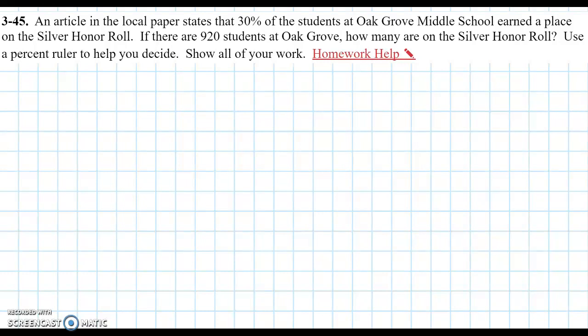Let's do a problem together that involves portions and using a percent ruler. So this problem says: an article in the local paper states that 30% of the students at Oak Grove Middle School earned a place on the silver honor roll. If there are 920 students at Oak Grove, how many are on the silver honor roll? Use a percent ruler to help you decide.